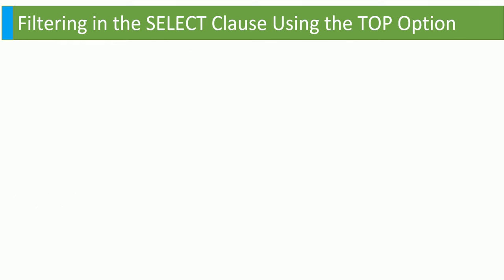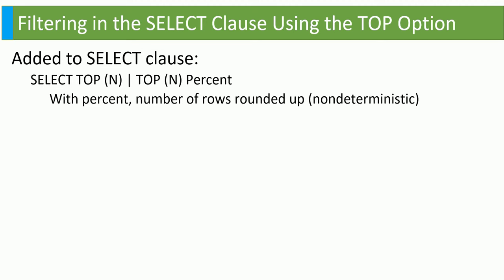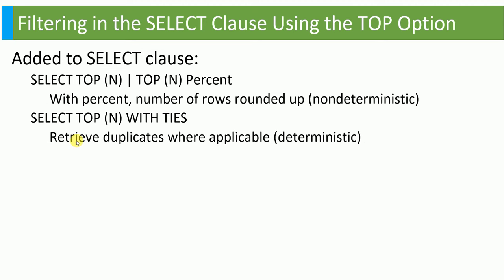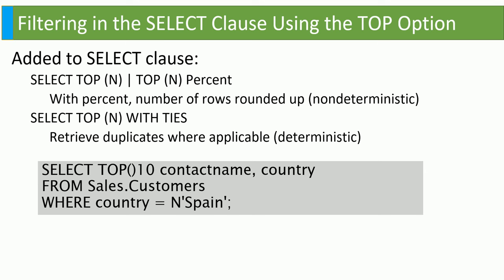Next is the TOP value. If your table has thousands or lakhs of rows and you only want the top 10 values, you use SELECT TOP N, where N is the number of rows you need — like 5, 10, 20, or 100. You can also use a percentage with TOP N PERCENT. With TOP WITH TIES, you can retrieve duplicate values where applicable. The N value should be inside brackets in the SELECT statement.